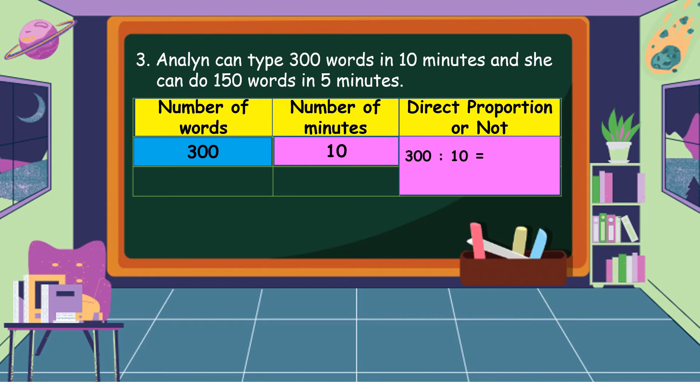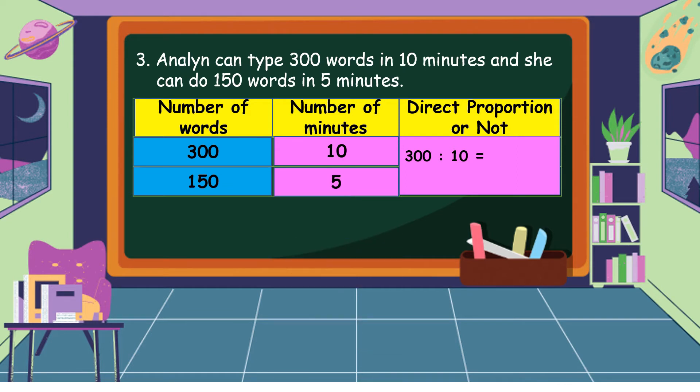For the second statement, she can do 150 words in 5 minutes, so our second ratio is 150 is to 5.